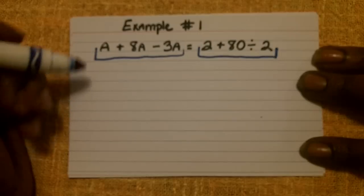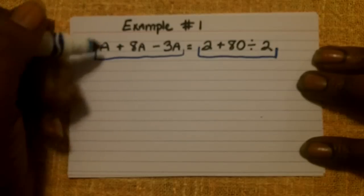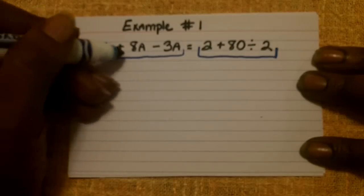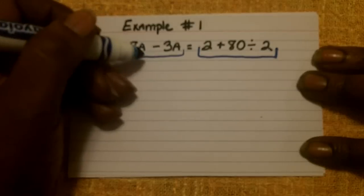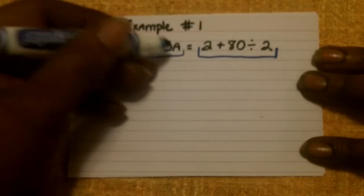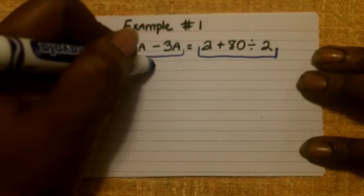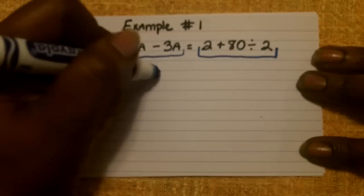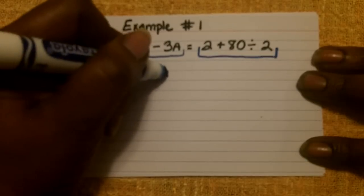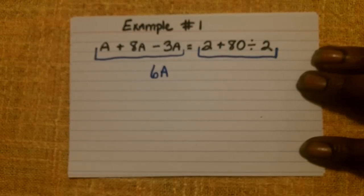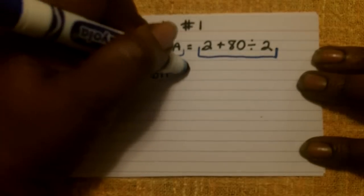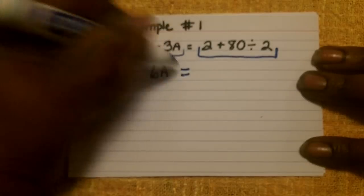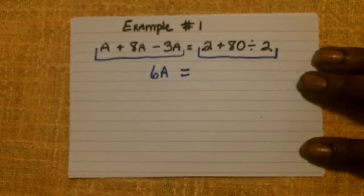If we remember from unit six, 1a plus 8a would give me 9a, and 9a minus 3a would give me a total of 6a. So I have combined my like terms in order to get 6a on the left-hand side of the equal sign.